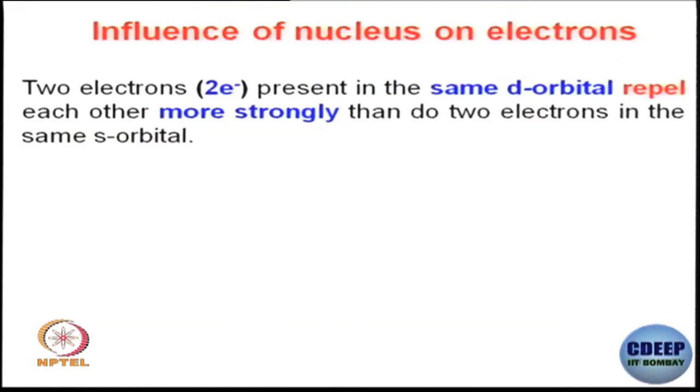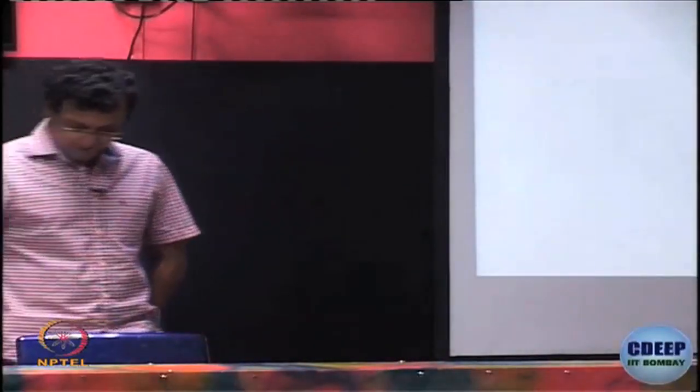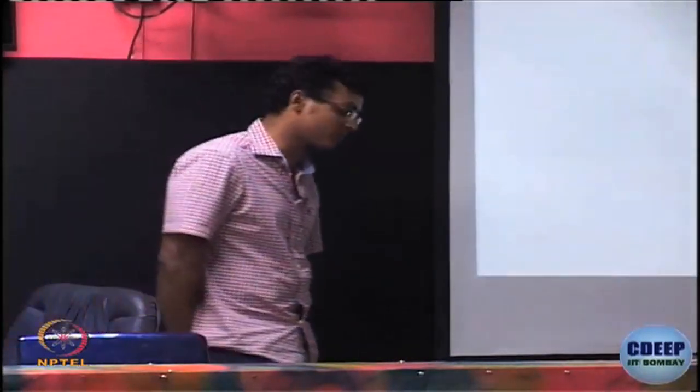Another thing you really need to understand is that d electrons repel each other much more compared to p or s electrons. How is that? It is like involvement — how much involved you are in a particular thing. Let me give you an example of your hostel rooms. In your hostel, if you have 2, 3, or 4 people in a room.